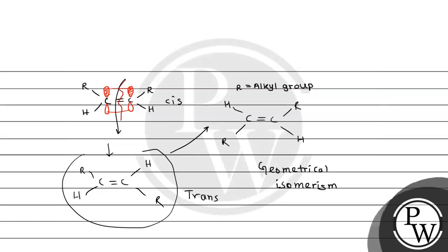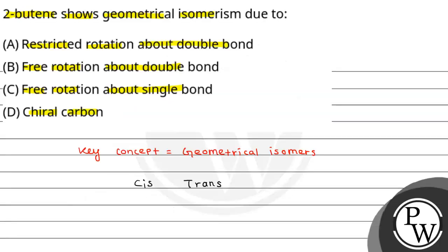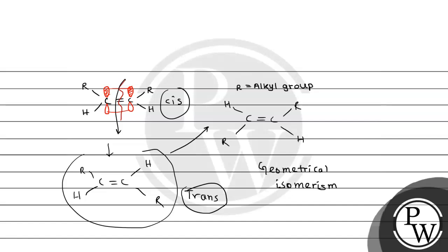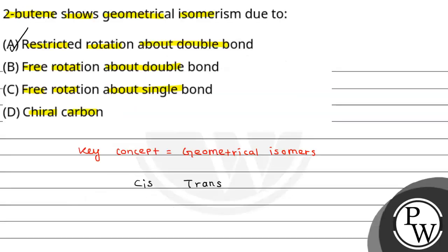So these geometric isomers — that is, cis-trans — are showing geometrical isomerism. Why? Because this bond does not rotate. If the bond were to rotate, cis would not remain a separate isomer from trans. So we can say: restricted rotation about the double bond is the reason, because rotation about the double bond would break the pi bond. Option B says free rotation about double bond, which is completely wrong — a double bond cannot rotate freely.